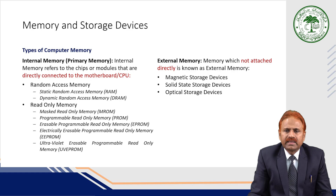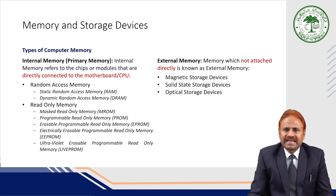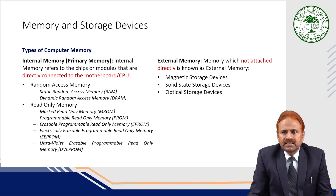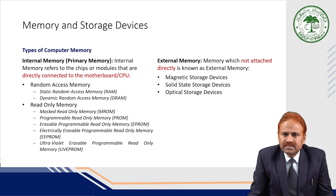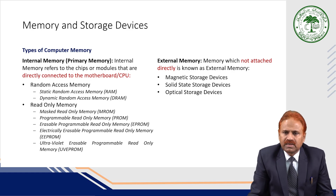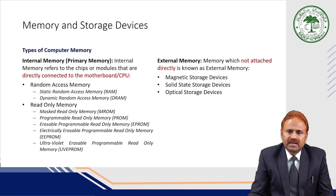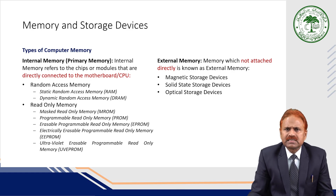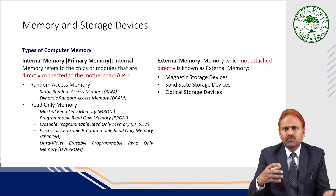External or secondary memory is memory which is not attached directly to the CPU. Examples include magnetic storage devices, solid state storage devices, optical storage devices, cache memory, and hard disk. These are all examples of external memory.